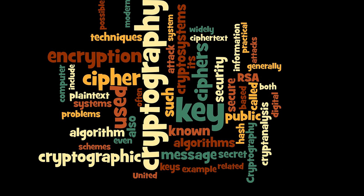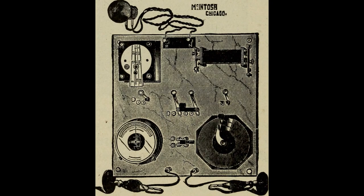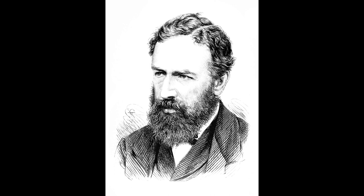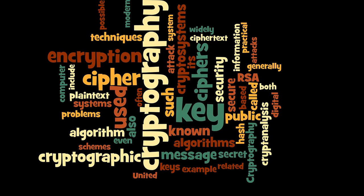During the early history of cryptography, two parties would rely upon a key that they would exchange by means of a secure but non-cryptographic method, such as a face-to-face meeting or a trusted courier. This key, which both parties kept absolutely secret, could then be used to exchange encrypted messages. A number of significant practical difficulties arise with this approach to distributing keys. In his 1874 book The Principles of Science, William Stanley Jevons described the relationship of one-way functions to cryptography and discussed specifically the factorization problem used to create a trapdoor function.